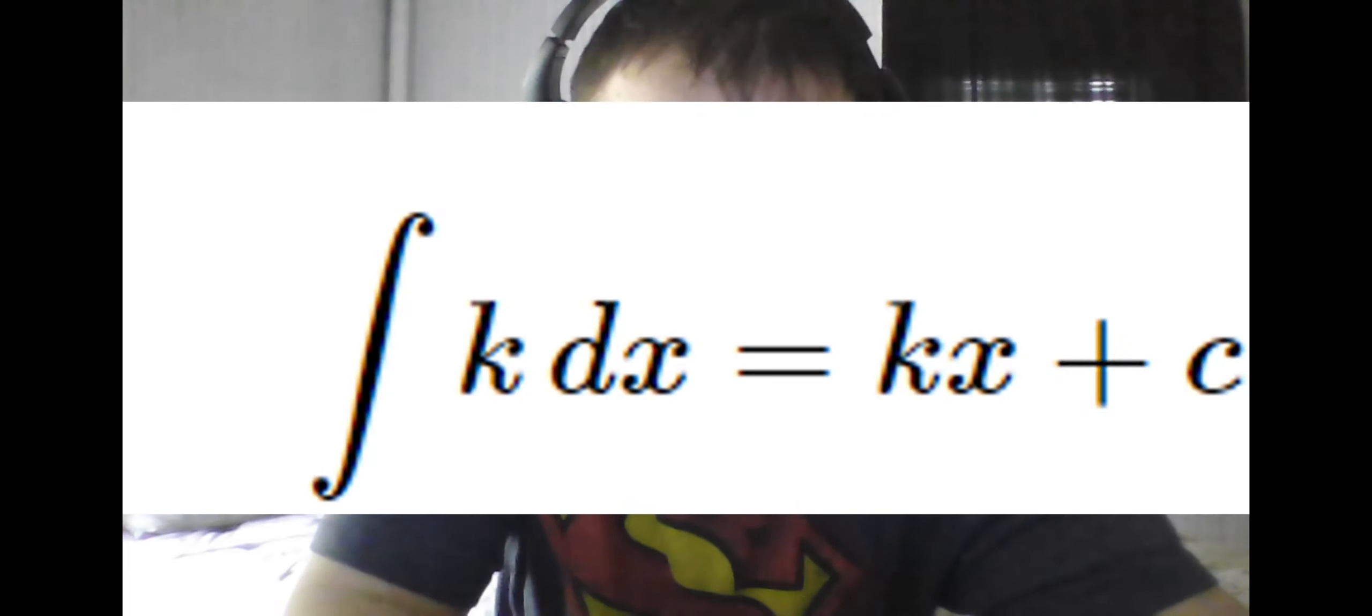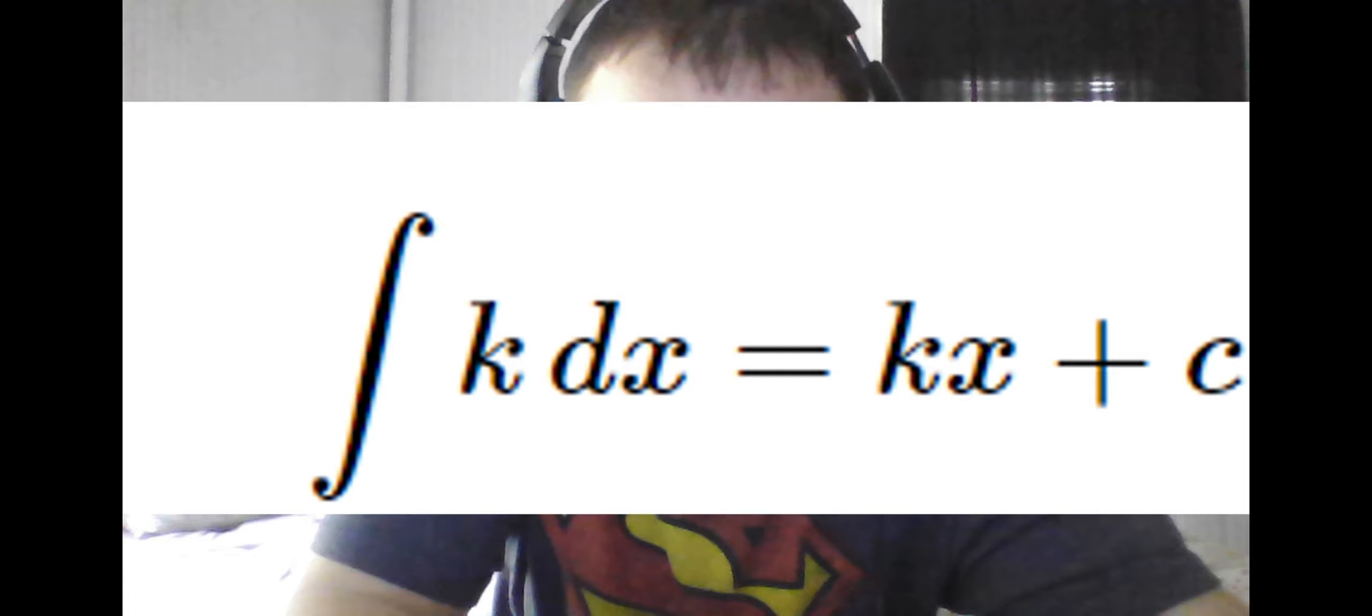The integral of a constant can be found either by using this formula, where the exponent n is 0, or by simply memorizing the derivative of a linear function is a constant, so as a result, the integral of a constant is a linear function.